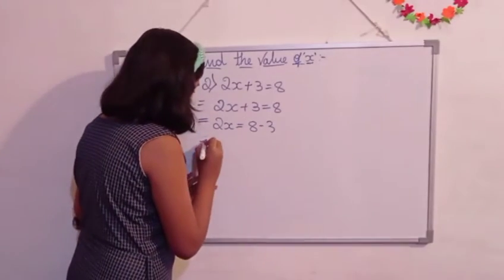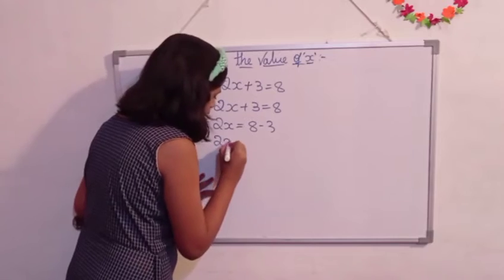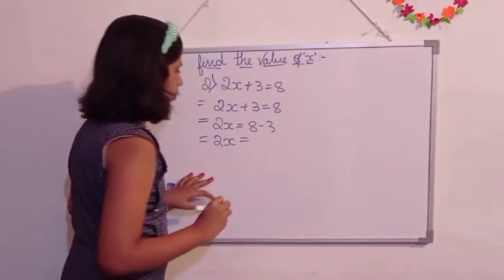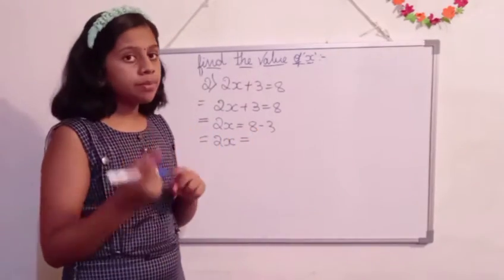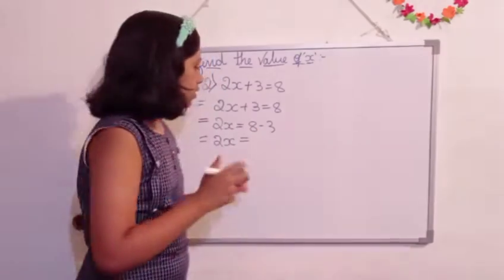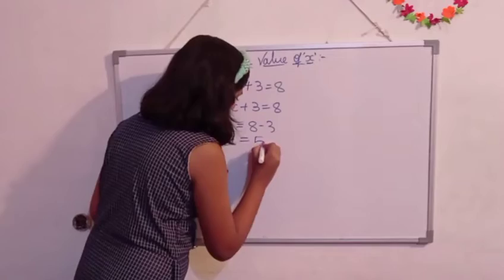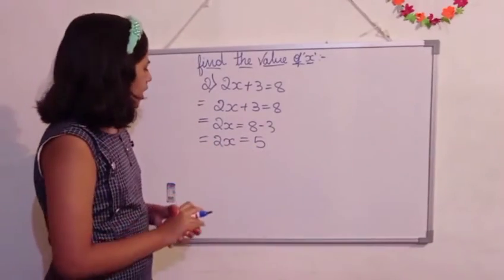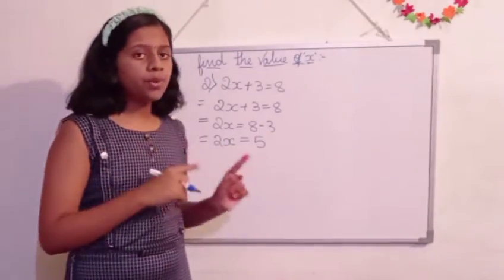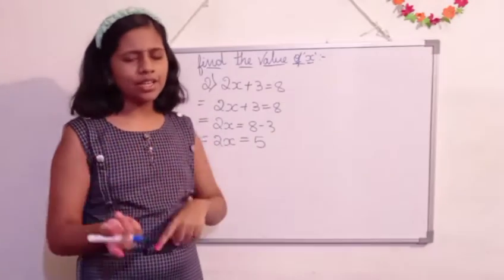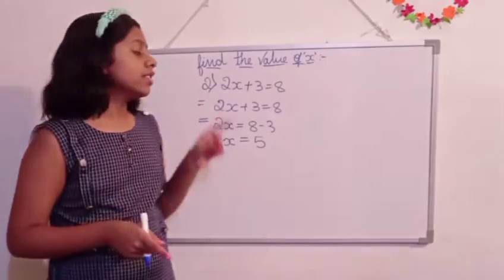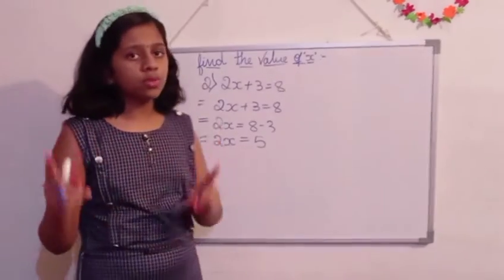Here, 2x equals 8 minus 3. So 8 minus 3 is 5. So 5 we are going to write. Here I didn't solve any equations. Why? Because here there is only the equation 2x. There is no other numbers or any other variables.